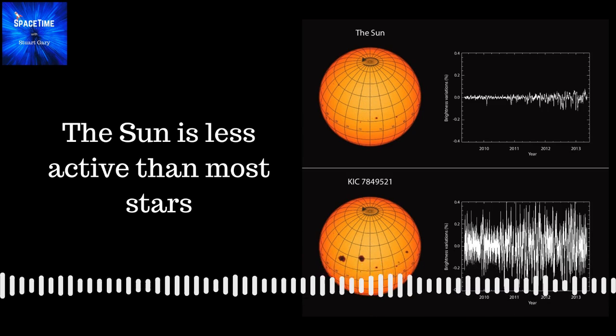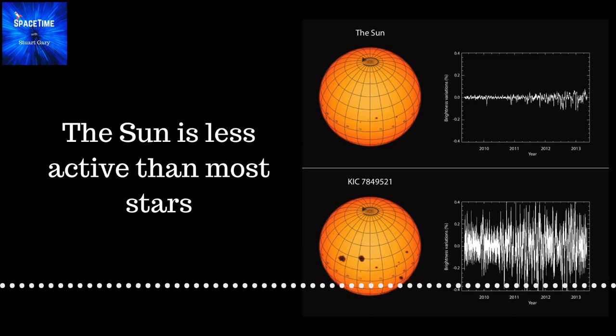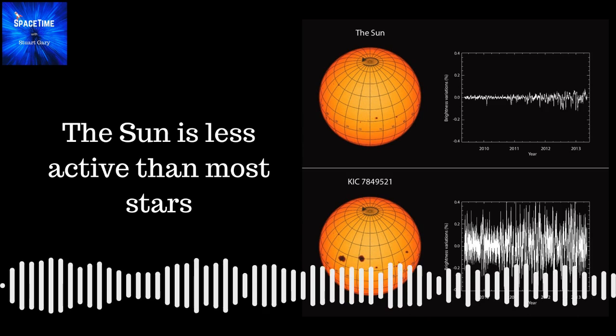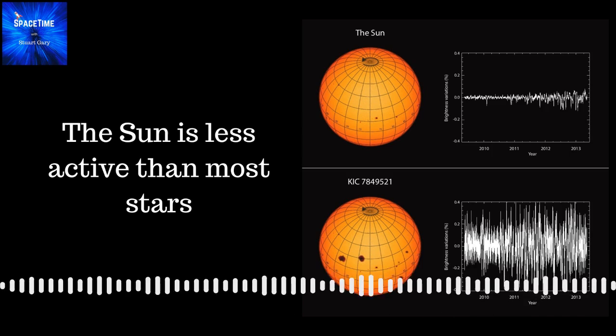A new study has found that our Sun is at least five times less active than other similar stars, which is probably a good thing for the development of life as we know it.